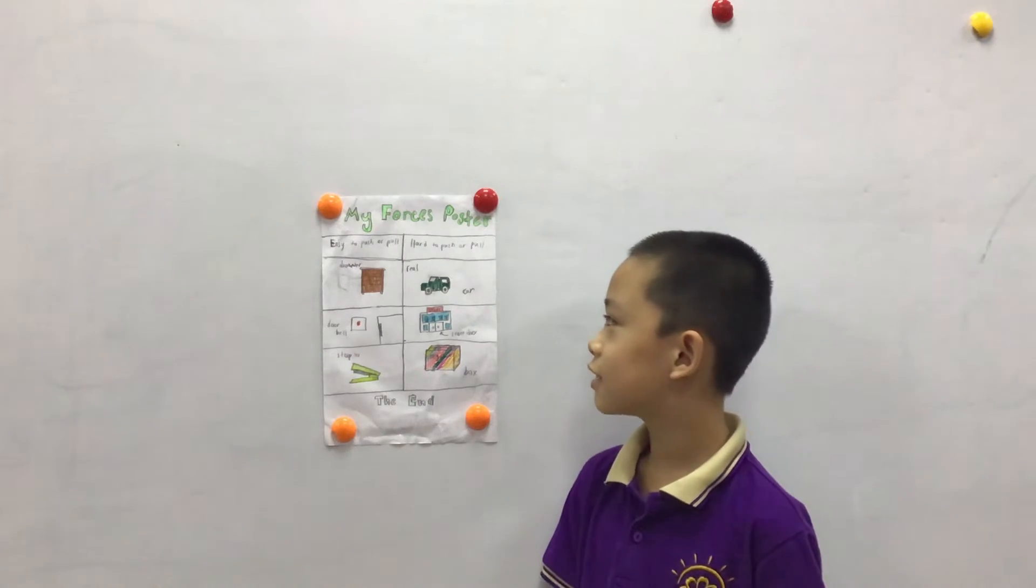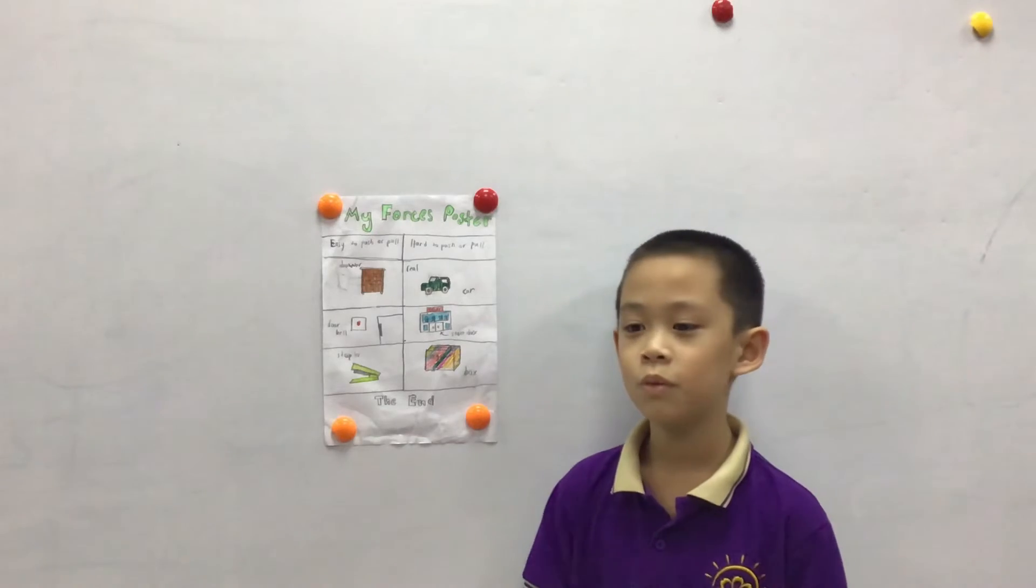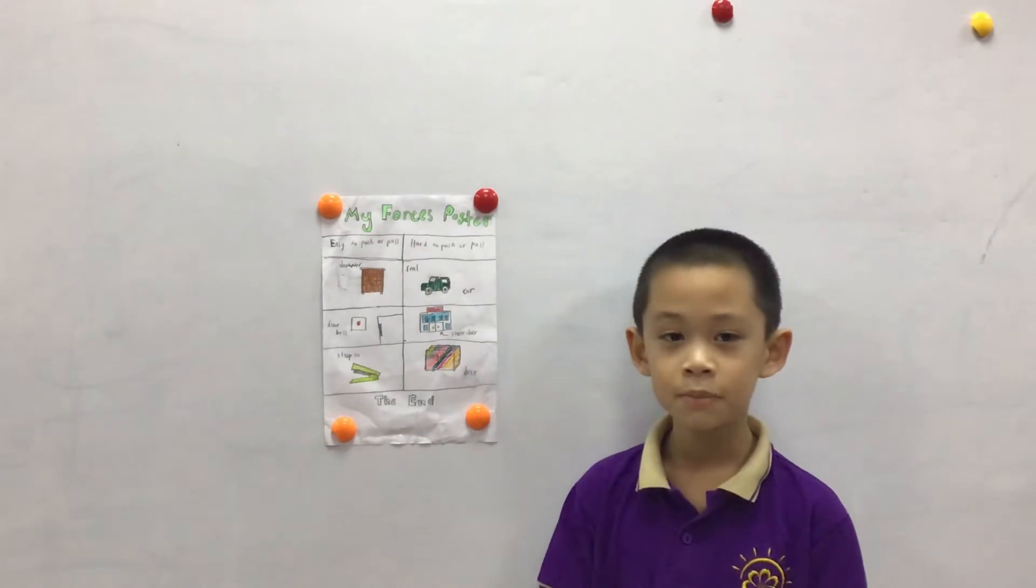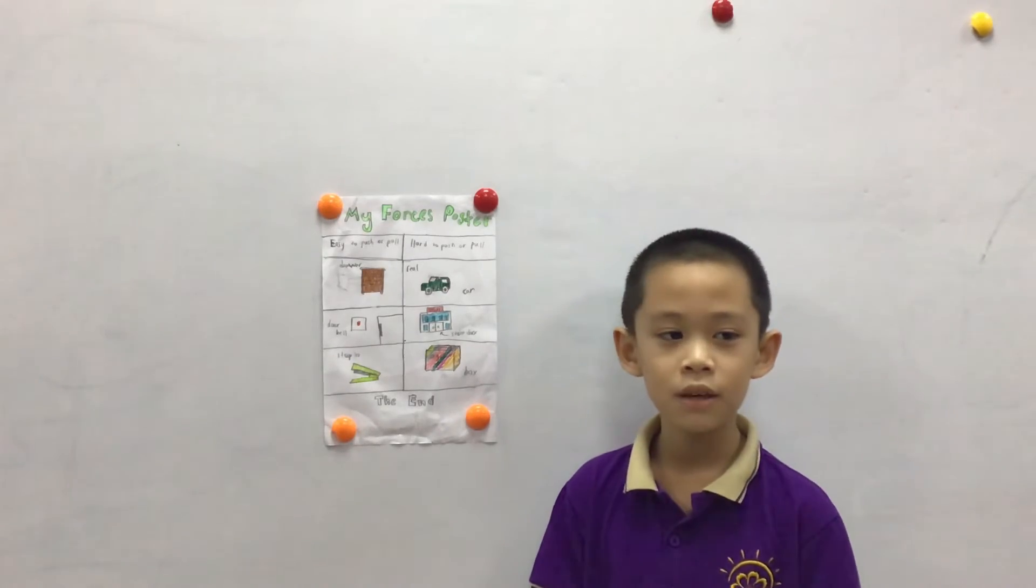The first thing that is hard to push or pull is the car. We push or pull it when the car is broken. It is hard to push because it is heavy and big.